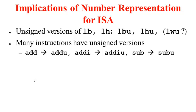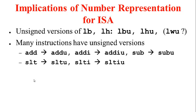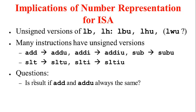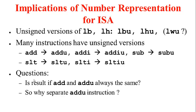The arithmetic instructions ADD, ADDI, and SUB all have an unsigned version corresponding to them. What other instructions among those we have seen so far have an unsigned version? The set less than and set less than immediate instructions have corresponding unsigned versions as well. Is the result of ADD and ADDU always the same? Given that they are the same, why do we have a separate ADDU instruction?